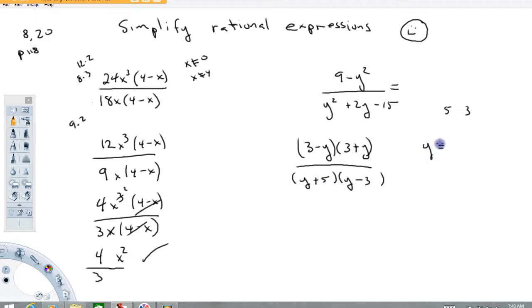A value of y equals 3 would also give us a zero on the bottom. Again, division by zero not allowed. So y cannot equal 3 as well.